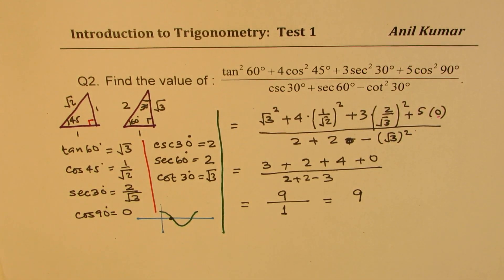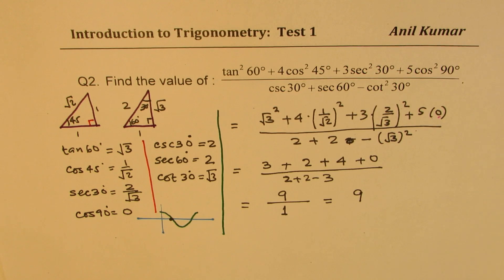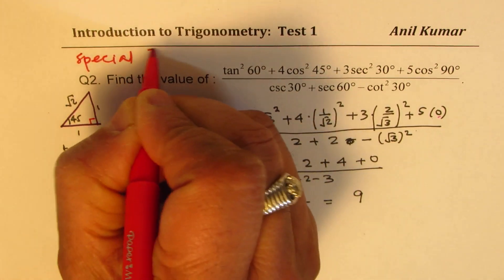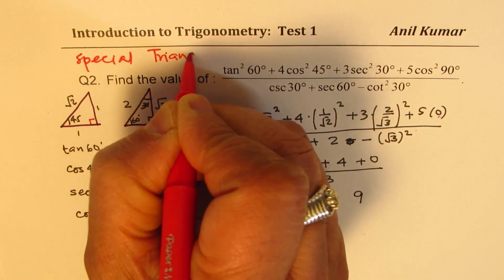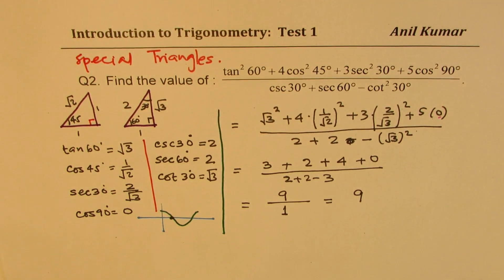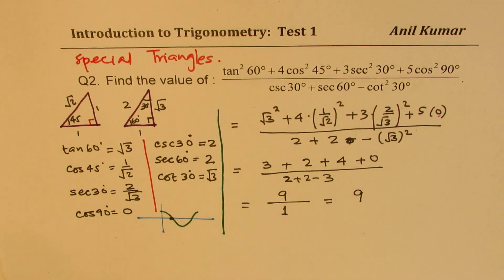This is an excellent question since you need to figure out the values for primary and secondary trigonometric ratios using special triangles. At times you may not be allowed a calculator to find the solution of these questions, so this is important to understand.